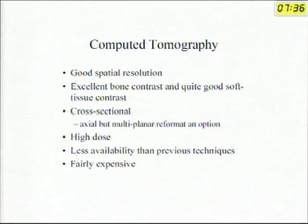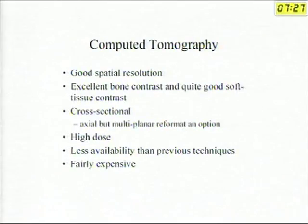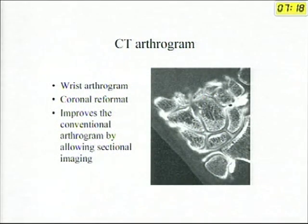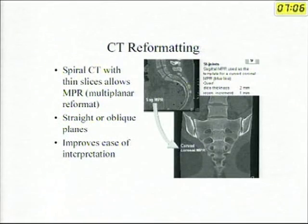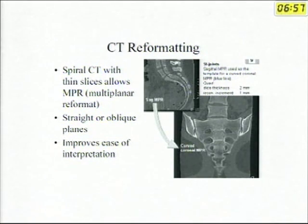Similarly for CT, we have the advantage of it being cross-sectional, but it is not truly multi-planar. We can see only in the axial plane; we can do multi-planar reformation with CT but we are not doing actual multi-planar imaging. Some people also now do a CT arthrogram — they inject intra-articular dye and do a scan so they can see structures that were earlier invisible to CT. CT reconstructions in coronal or sagittal are reformatted from transverse acquisitions.